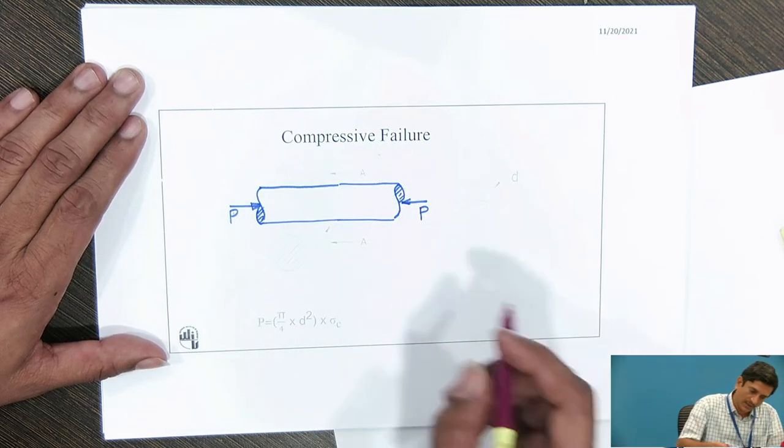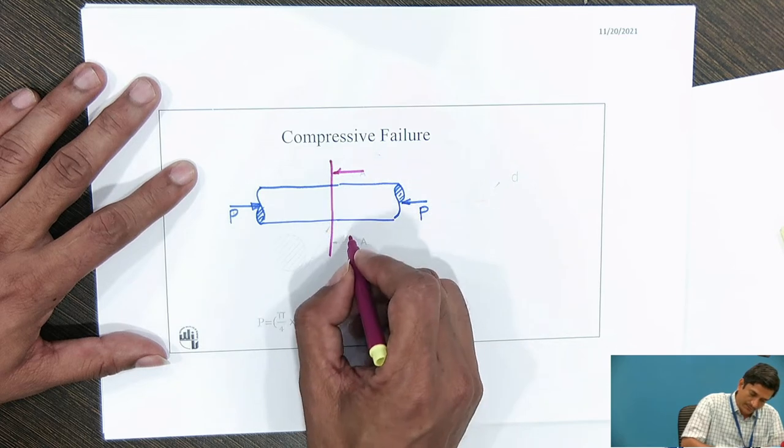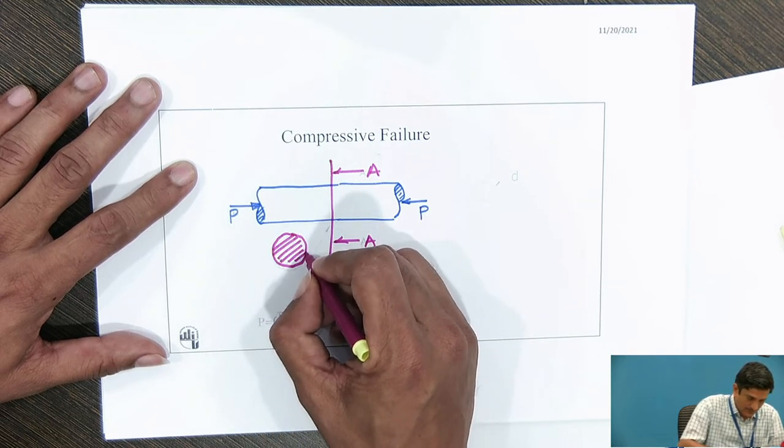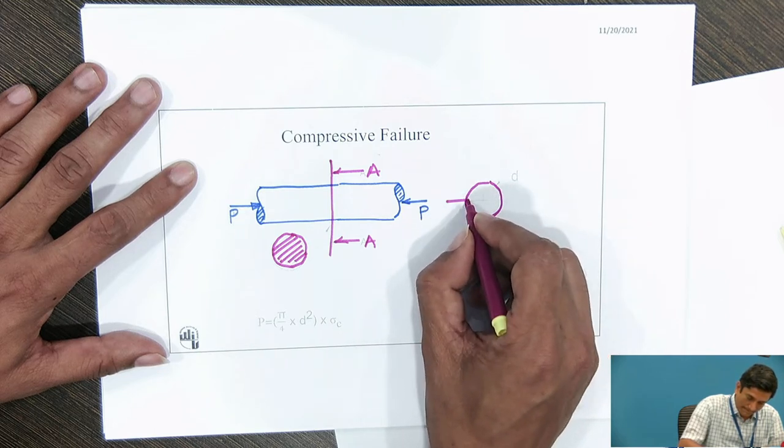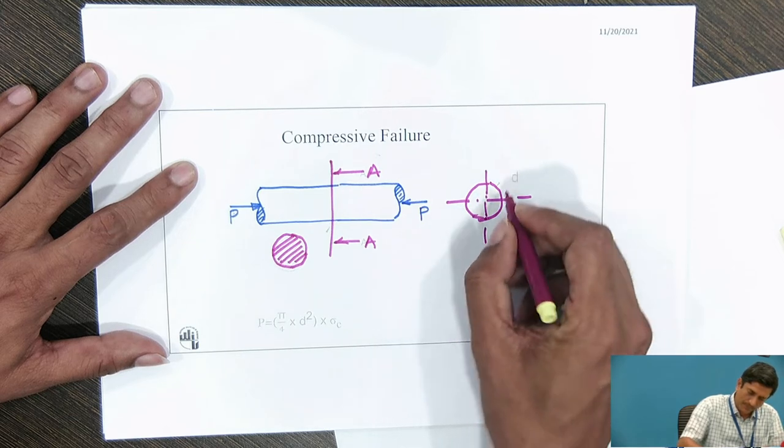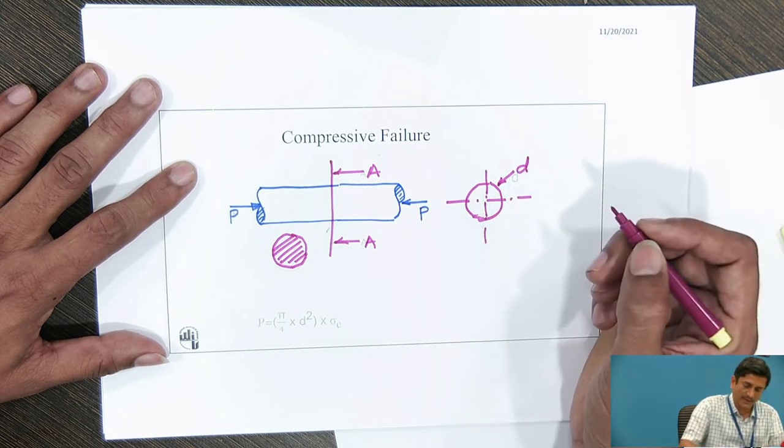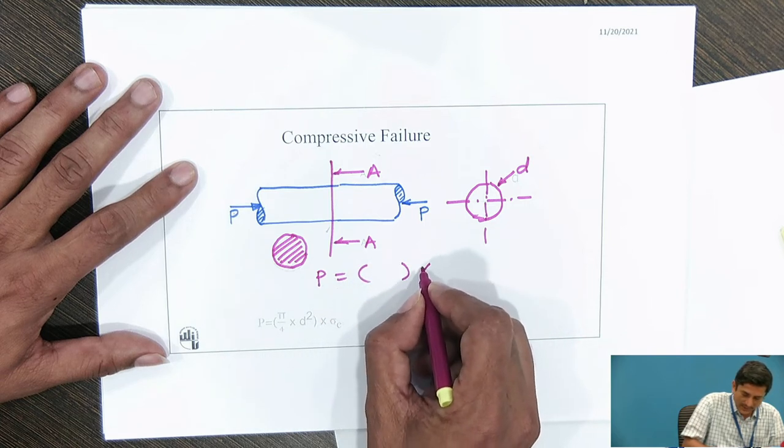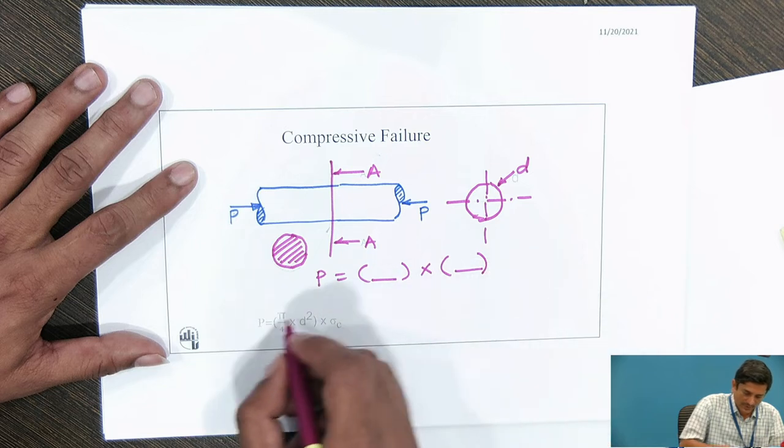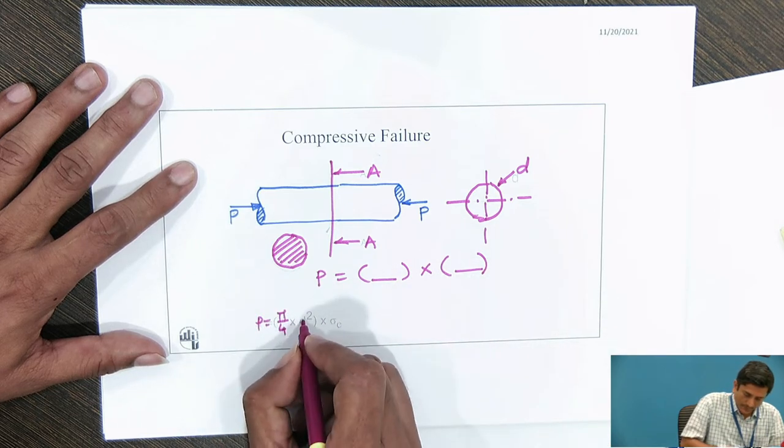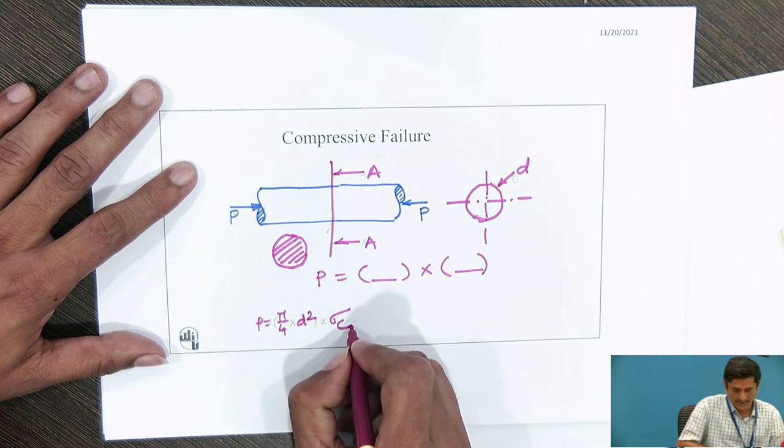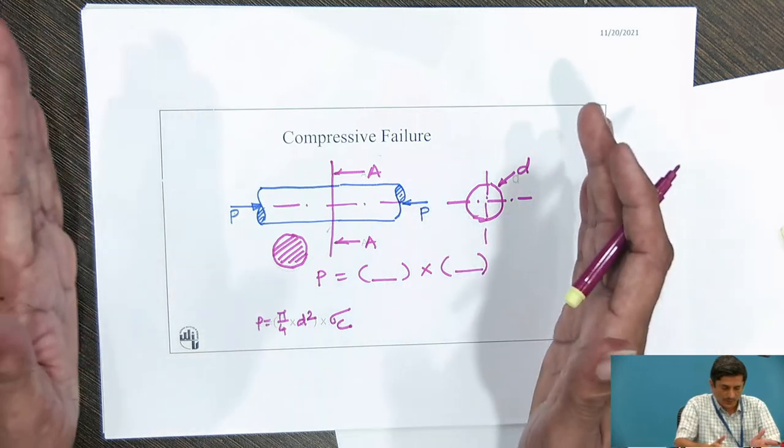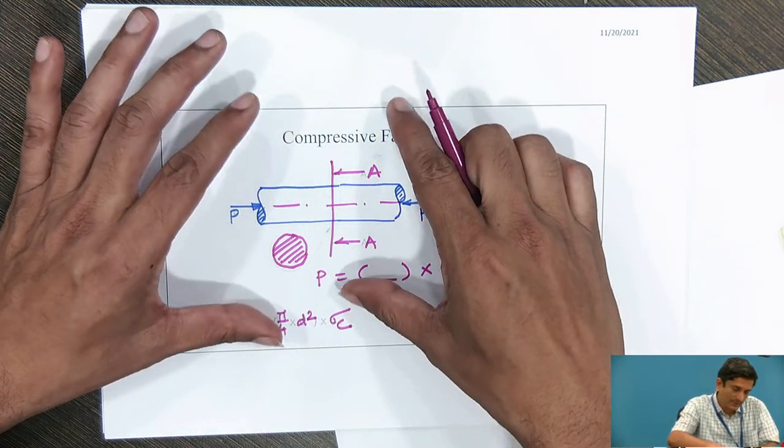If I take some area here, the component is having circular cross section. In the side view also, you can check the diameter is D. Therefore, I can write the equation for P equals pi by 4 D square multiplied by sigma C. The sigma C value comes because the component is under compression.